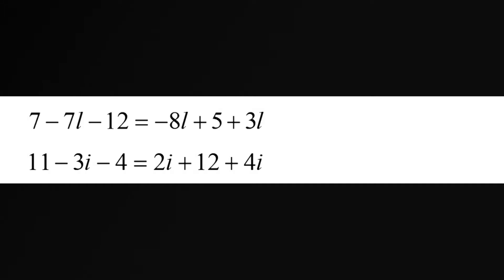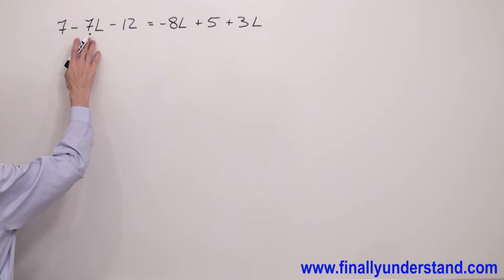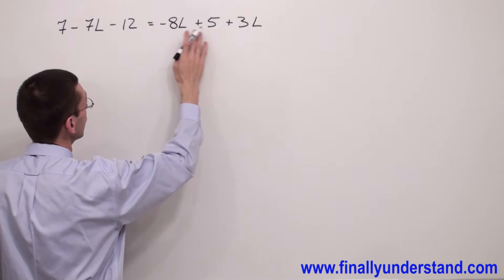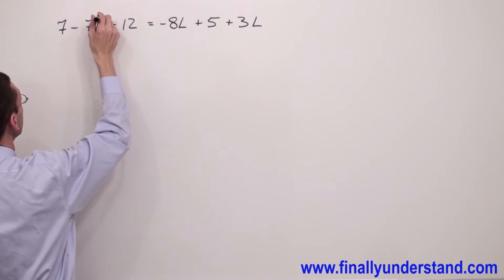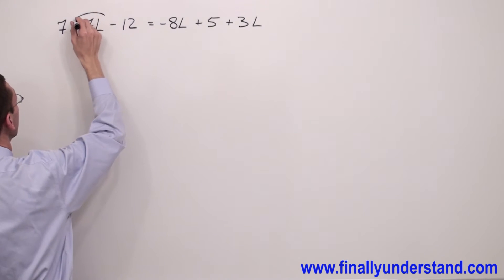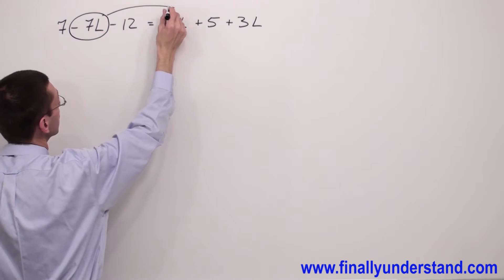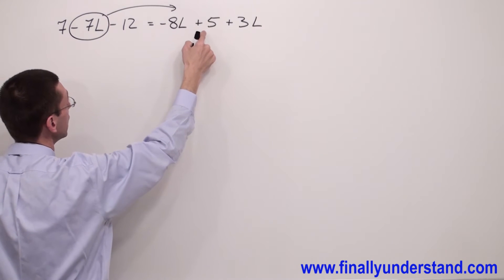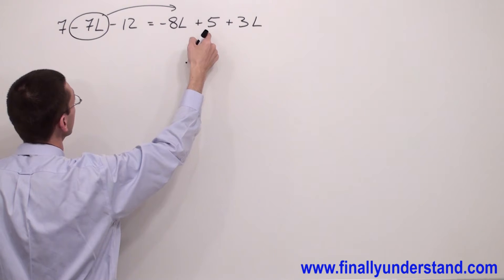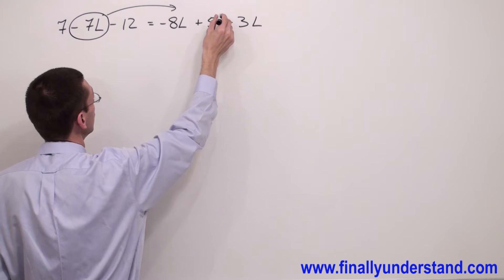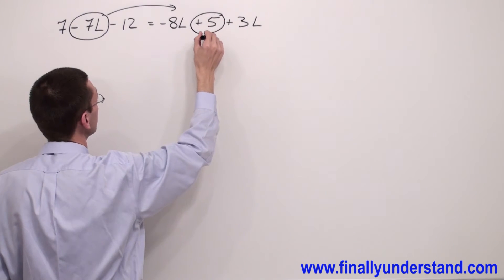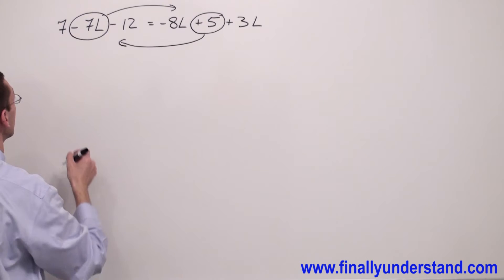Let's take a look at the first example. I have one term with l on the left side and two terms with l on the right side. That's why I'm going to take this one term with l and move it to the right side. And because I have one term without l on the right side and two terms without l on the left side, I'm going to move this 5 to the left side.